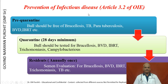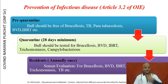For prevention of infectious diseases, Article 3.2 of the Office International des Épizooties states that bulls should be free of brucellosis, tuberculosis, paratuberculosis, bovine virus diarrhea, IBR, etc. Bulls should be quarantined for 28 days and tested for all these diseases before being used for semen collection. Semen evaluation should be done annually for brucellosis, BVD, IBR, trichomoniasis, etc.